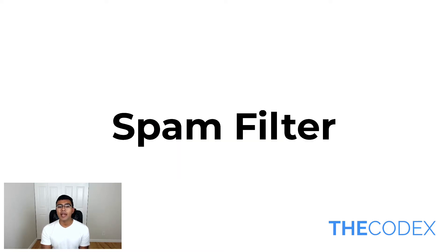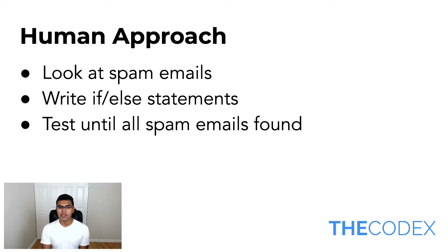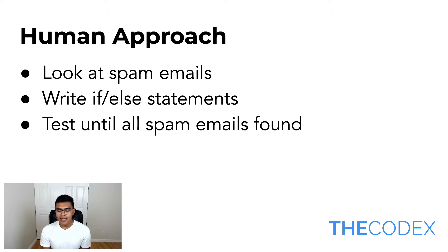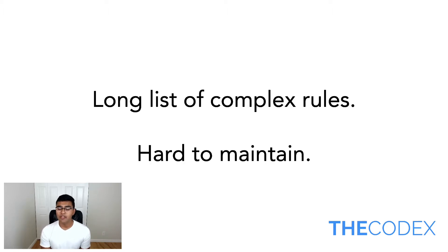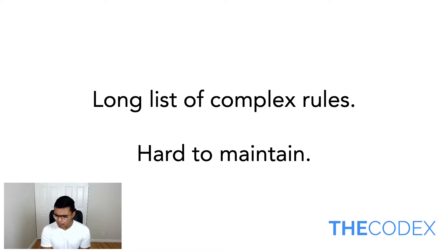How would you design a spam filter? Spam filters have been around for a couple of decades now and are one of the most important machine learning tools invented. If a human were to do this, the human approach would be to look at the spam emails, write a lot of if-else statements, and test until all the spam emails have been found — like, if my email contains the word 'deal' or 'promo' or if it's by this email address, that is spam. The problem with this is it's a long list of complex rules, very hard to maintain. And if spammers decided to change up their ways, you'd have to go back to your rules, manipulate them, add some, subtract some — and that doesn't seem like the best way to do it.